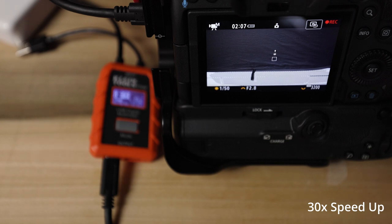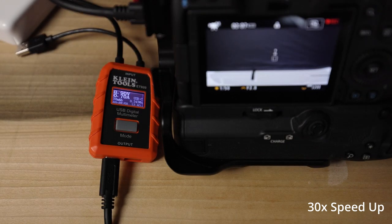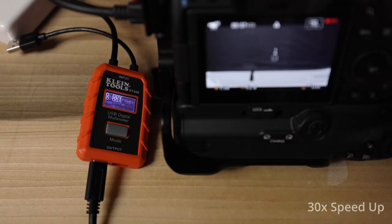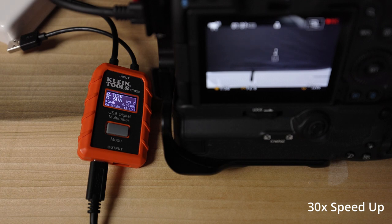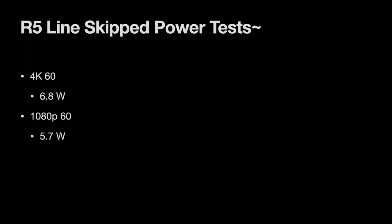To put line skipping into perspective, I repeated the 4K60 test using my standard R5, which does use line skipping in that mode. The power usage was a mere 7 watts — just half of what the R5C draws at the same frame rate and resolution. That is the power saving you get with line skipping.